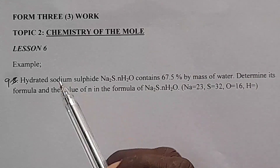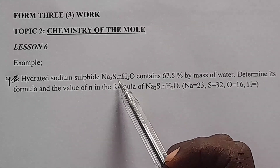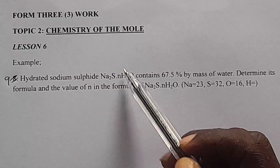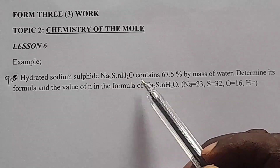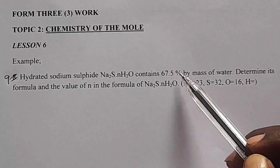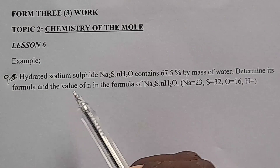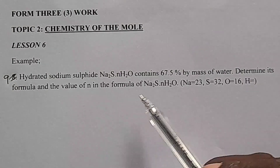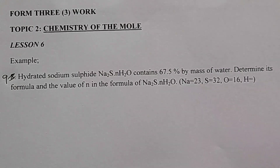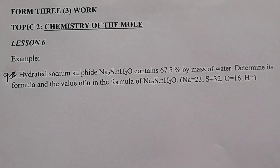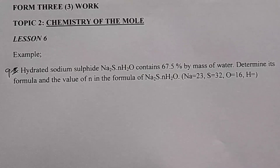In question 9, we are told hydrated sodium sulfide written Na₂S·nH₂O, which is n of water of crystallization, contains 67.5% by mass of water. We are determining its formula and the value of n in the formula of hydrated sodium sulfide. So just like the way we have done, we are supposed to write first of all our components.